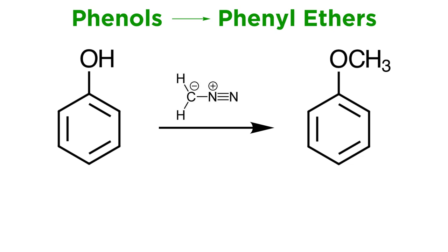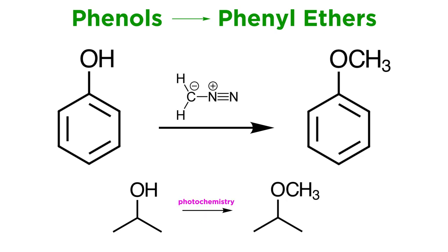This technique can be extended to phenols as well, which can be methylated by the same method since phenols are relatively acidic due to the resonance stabilization of the conjugate base. Normal alcohols, however, are not acidic enough to protonate diazomethane, and thus will not work for this type of chemistry. Alcohols can be methylated in this way if the mixture is irradiated with light of a particular wavelength, but we will investigate photochemistry later in the series.